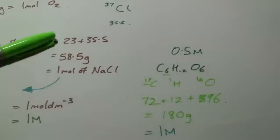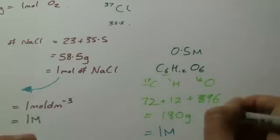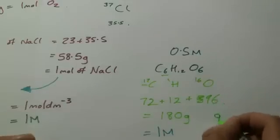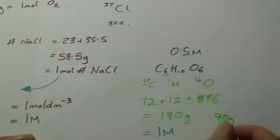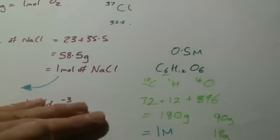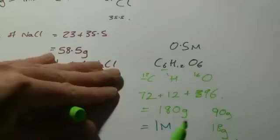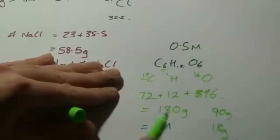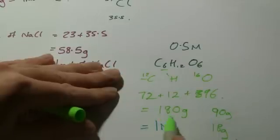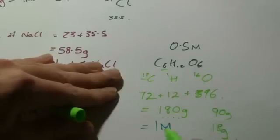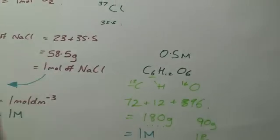If I wanted a 0.5 molar solution of glucose, I could add half as much - 90 grams. If I wanted a 0.1 molar solution, I could add a tenth of my original mass. I can make any different solution by measuring out the correct amount of solute in grams and dissolving it in a liter of water or any other fraction.